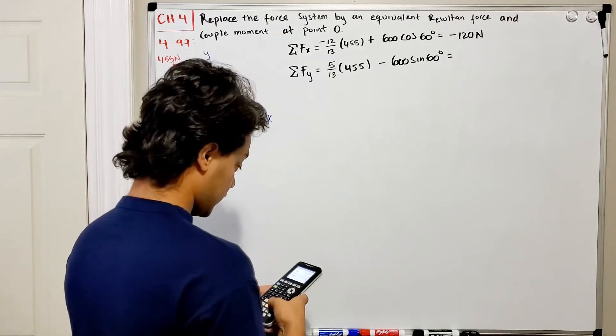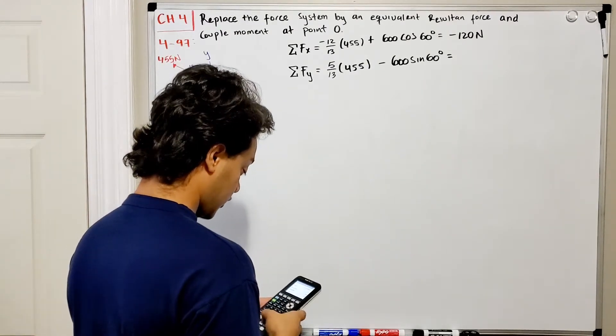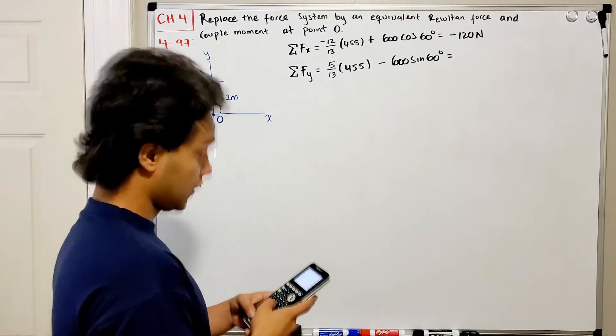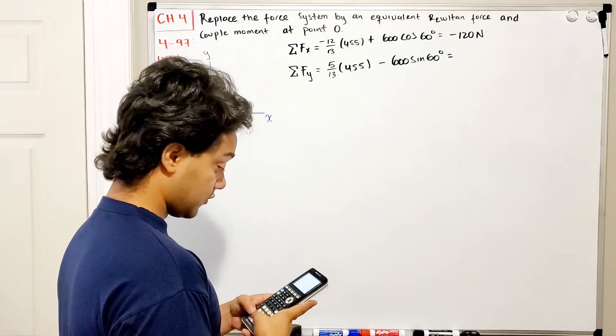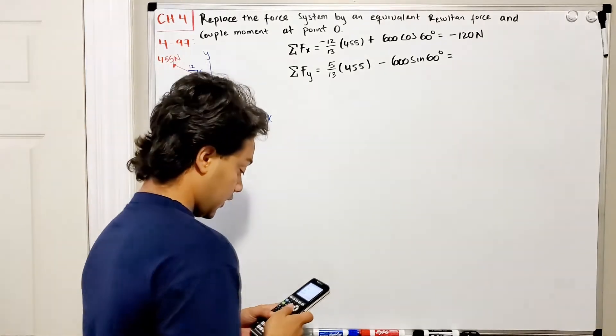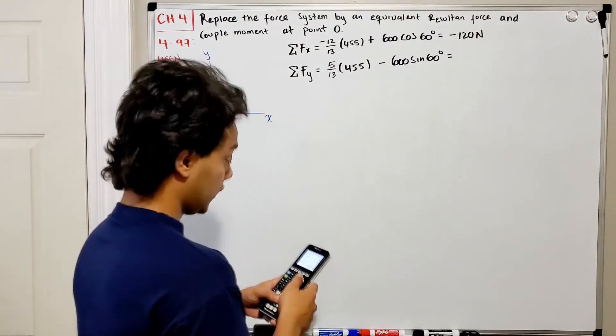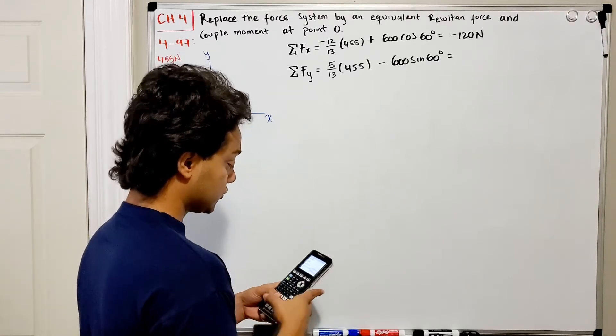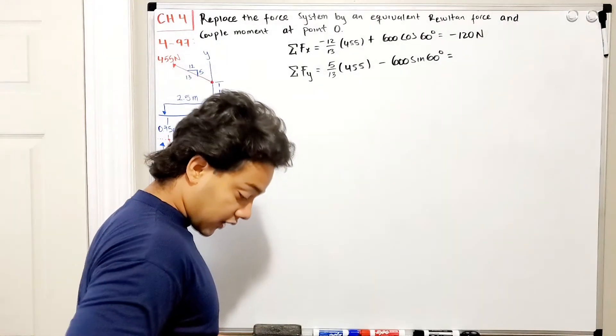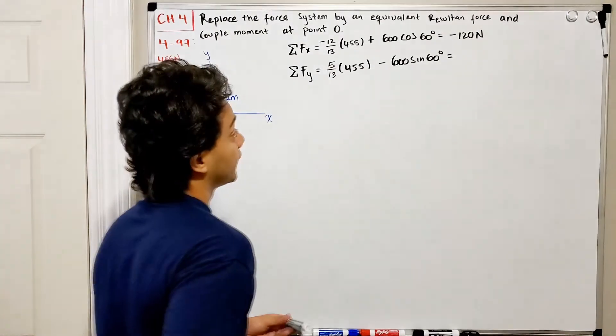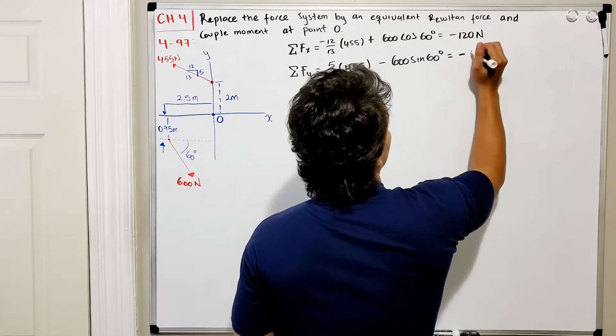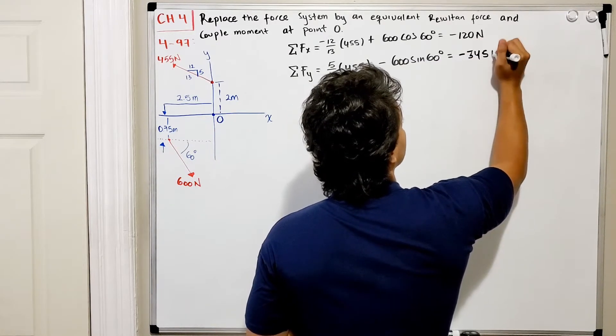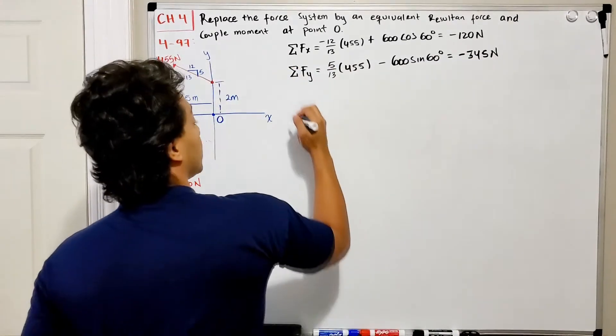If we do 5 over 13 multiplied by 455, we get 175, and 600 sine of 60 degrees gives 520. So 175 minus 520 gives negative 345, meaning we're going down 345 N.